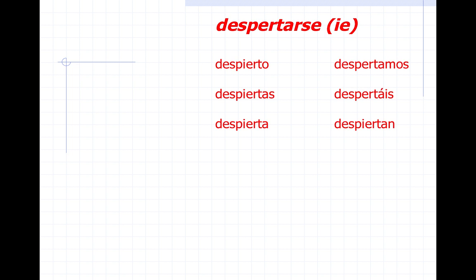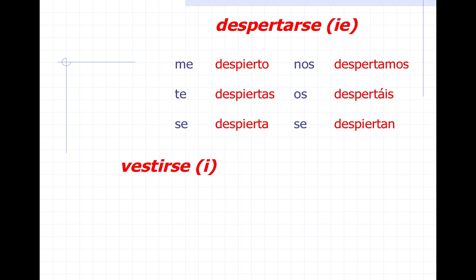The same thing goes for despertarse, but despertarse is a stem changer — it goes from an E to an IE. So: me despierto, te despiertas, se despierta, nos despertamos, os despertáis, se despiertan.